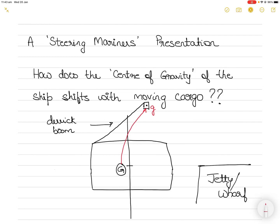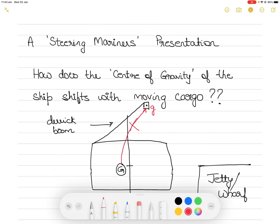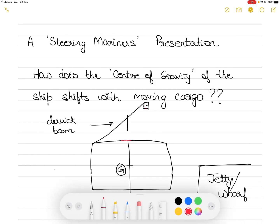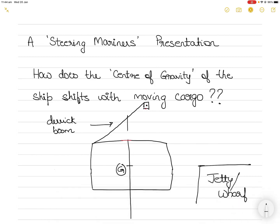Especially when the surveyor gives you different situations of shifting cargo, students get confused and get it wrong. So this is incorrect. You have to understand a basic concept first before we go into the depths of how the center of gravity shifts with moving cargo. The first thing to understand is that the vessel has a center of gravity denoted by the capital letter G — the center of gravity of the ship or vessel.